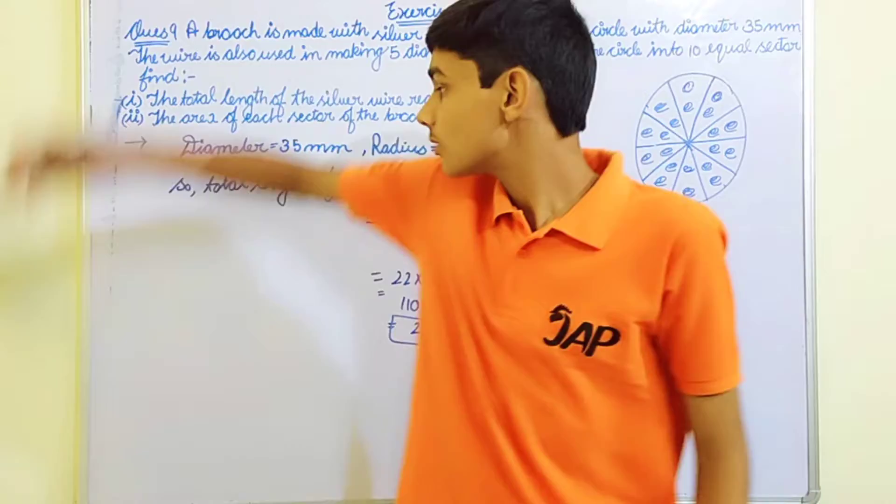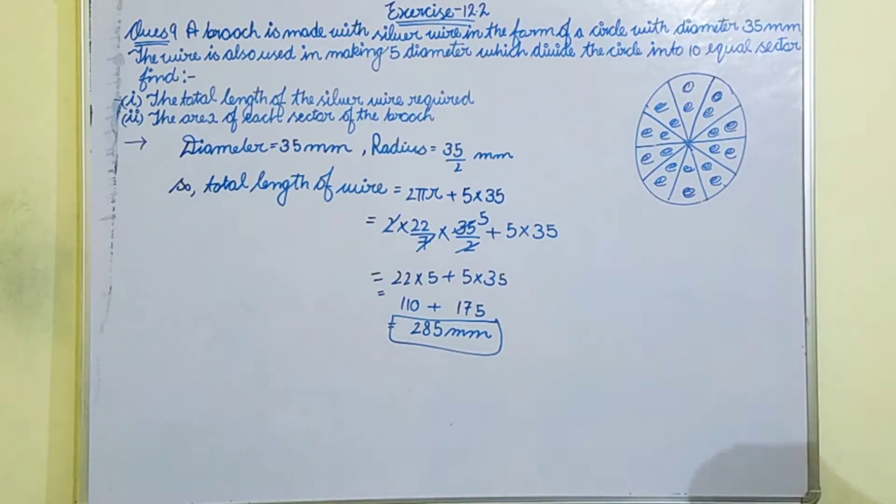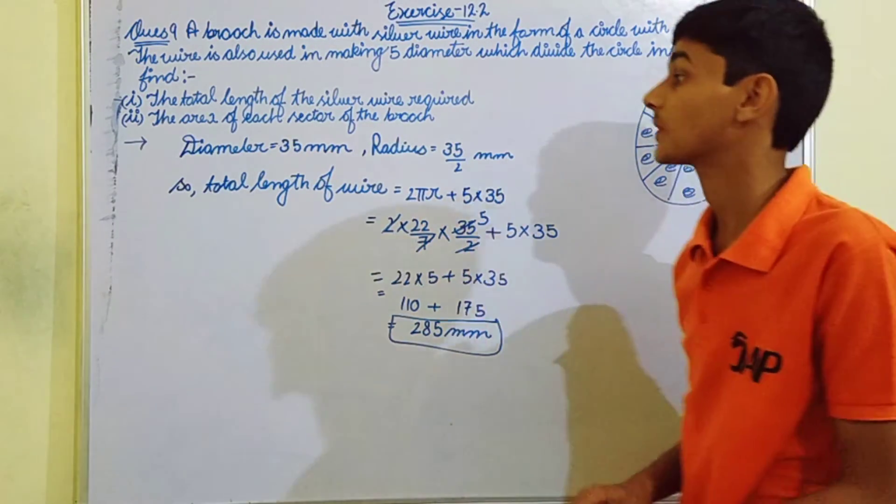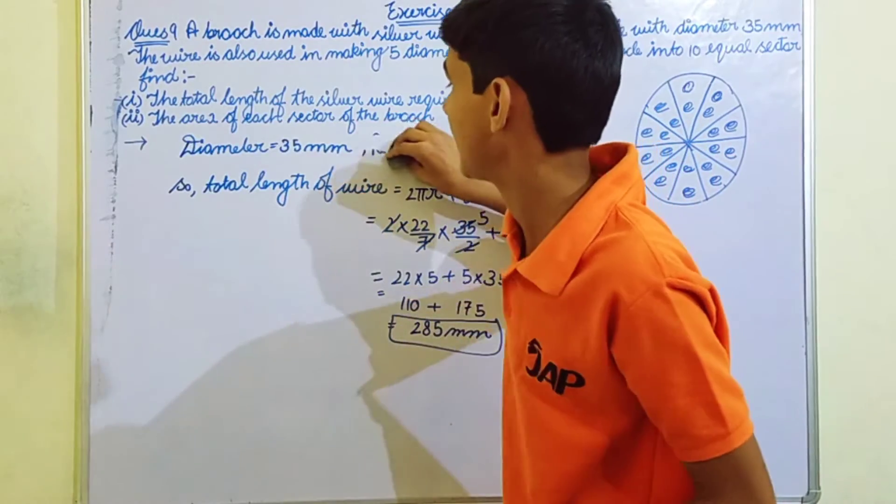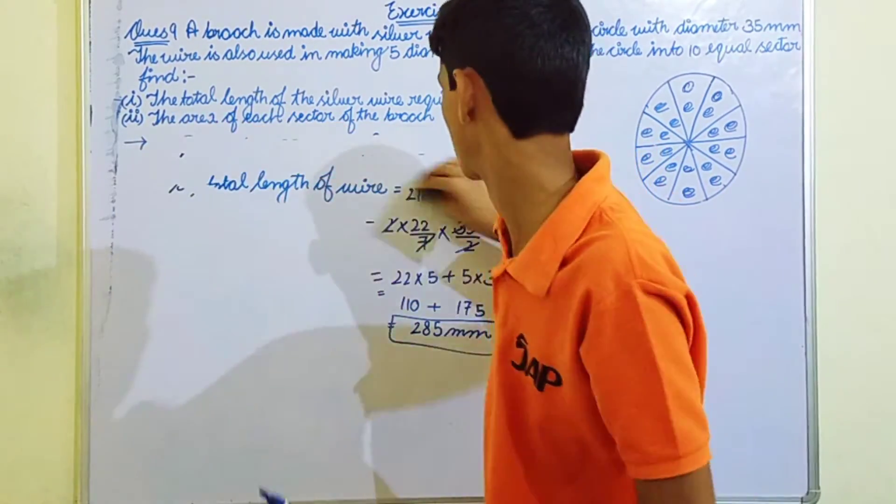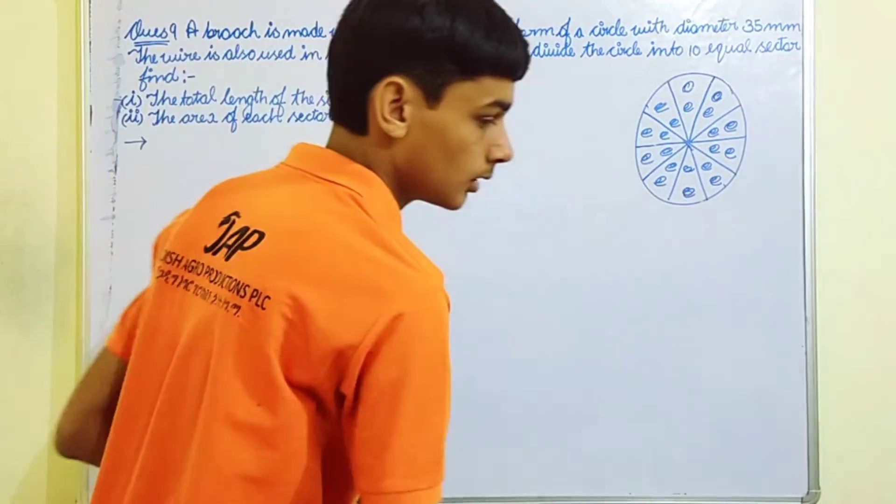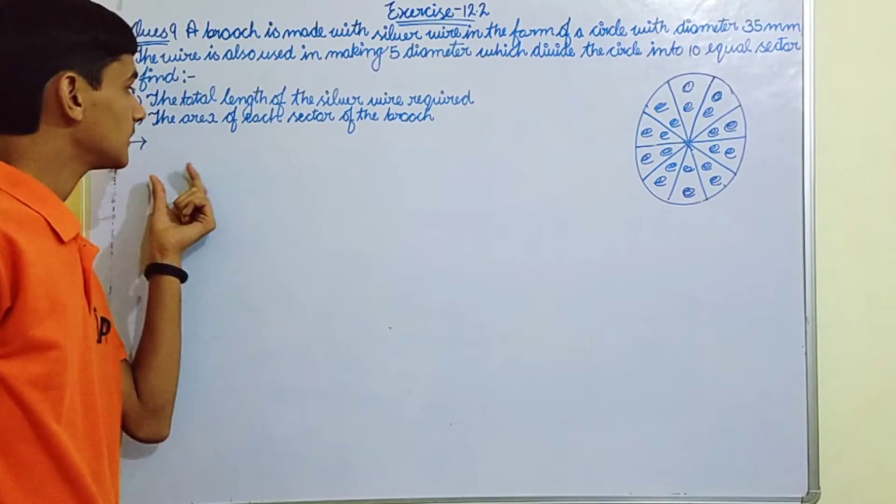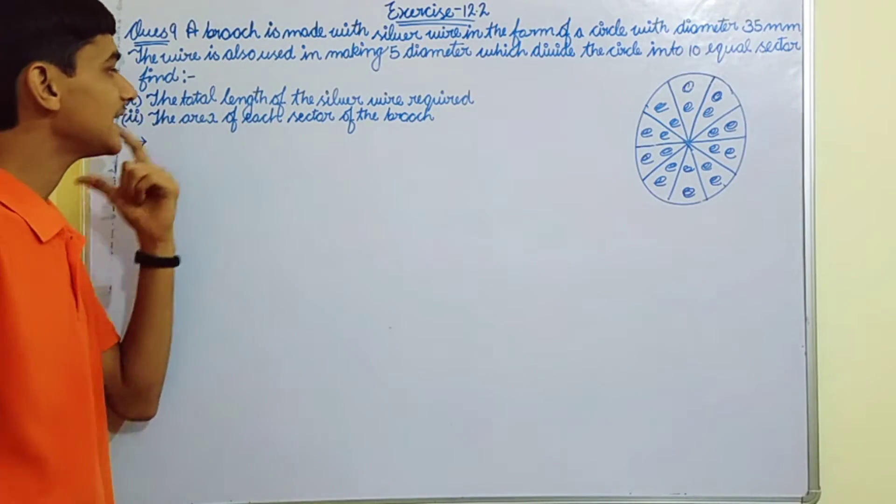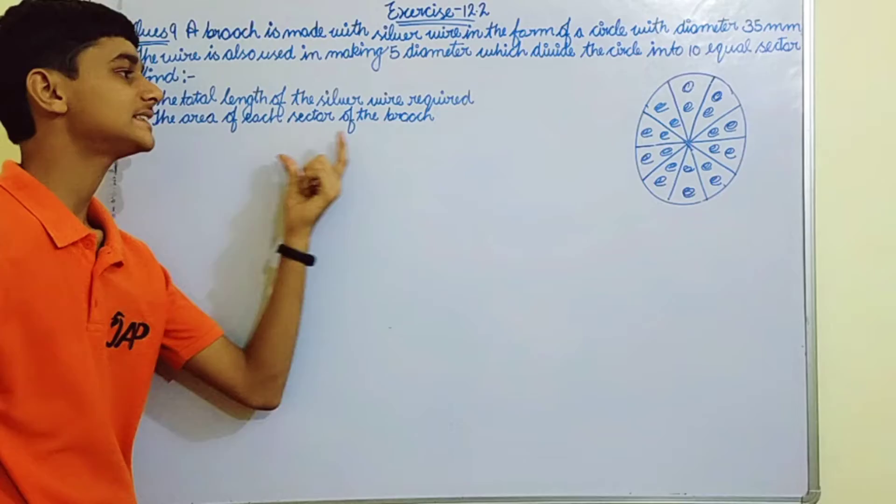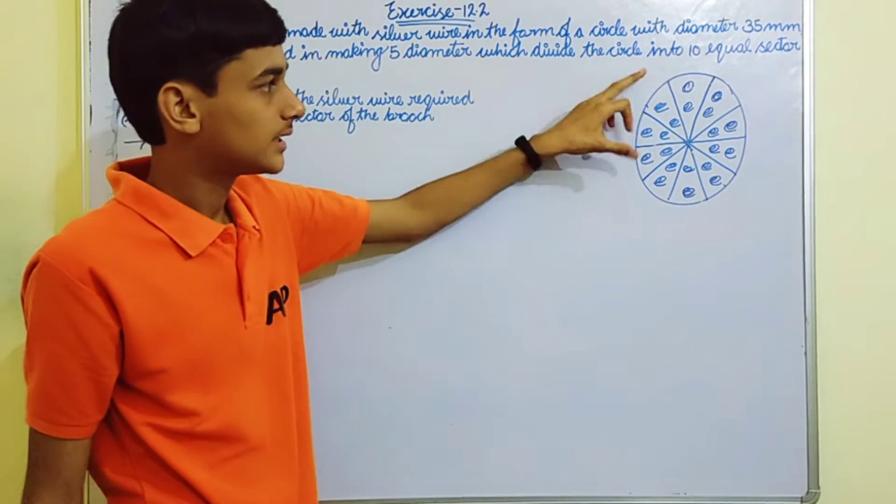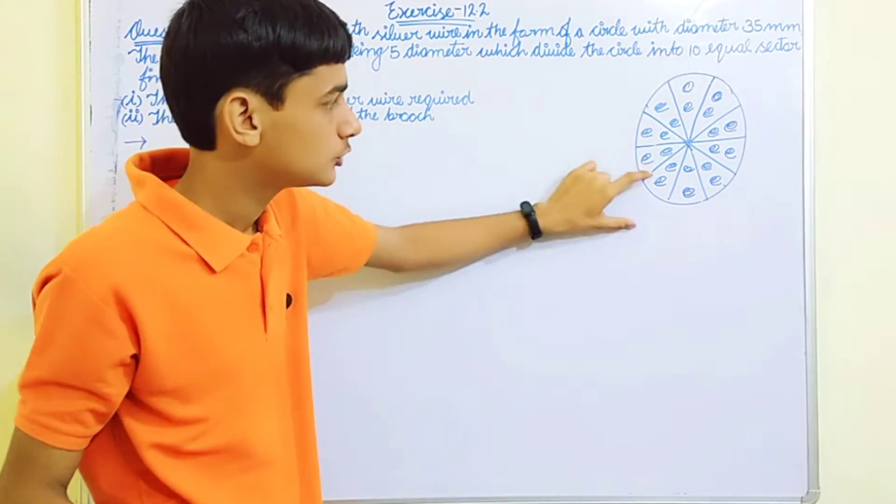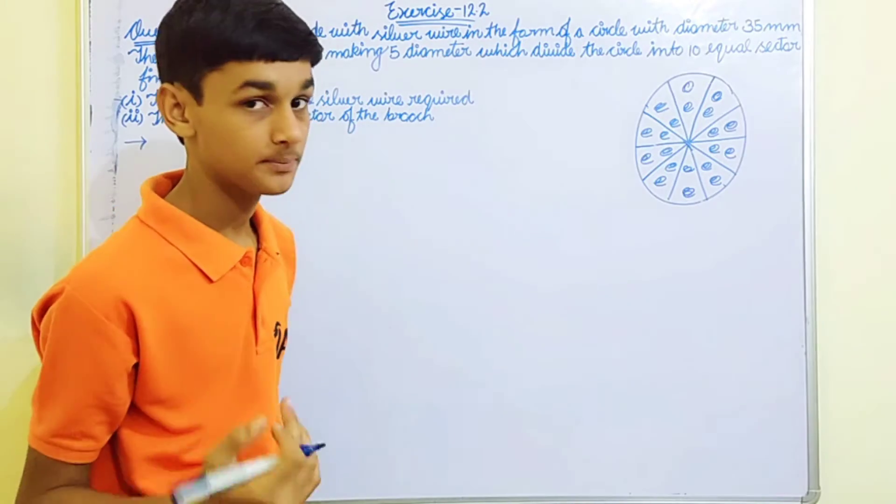So you can have a snapshot or you can write it down. Next part: they are asking to find the area of each sector of the brooch. There are ten equal sectors, so we need to find the area.